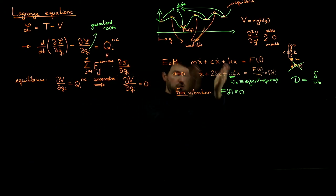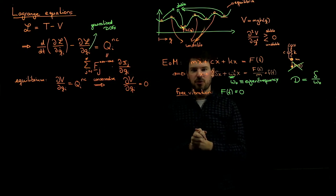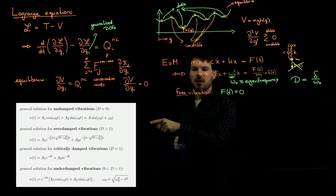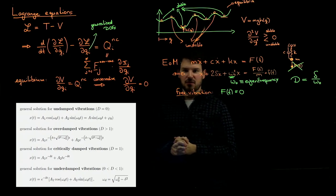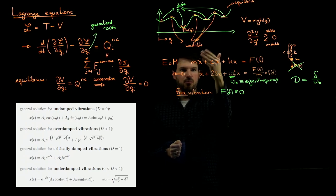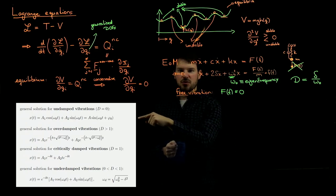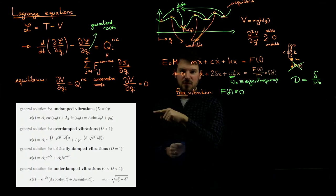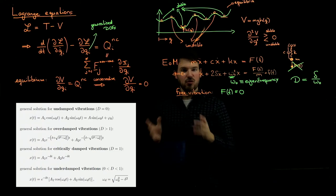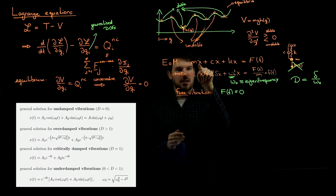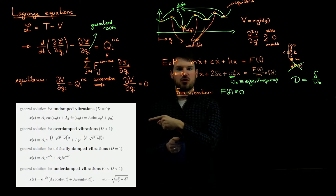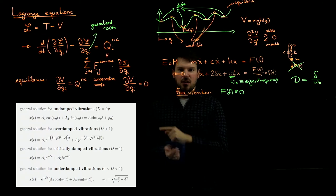We identified a number of solutions for the free vibration case — shown on the formula sheet are the four possible cases discussed in class. For an undamped vibration — D is zero, delta is zero, or C is zero — we just have a harmonic oscillation with cosines and sines. There are two ways of writing this: either A₁ and A₂ are the unknowns, or A and φ₀ are the two unknowns found using the initial conditions. It's a second-order equation in time, which means we have two initial conditions to find the two unknowns.